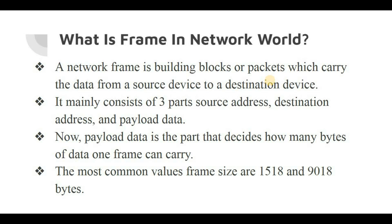A network frame is basically the building block or packet that carries data from a source device to a destination device. A frame can be divided into many components, but the major components are three: source address, destination address, and the payload data. Out of these, the payload data is the part that decides how many bytes one frame can carry, and this value determines whether a frame can be called a jumbo frame.